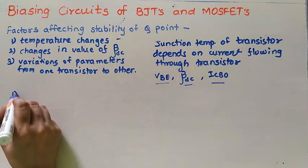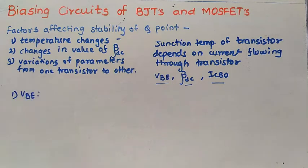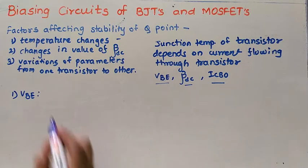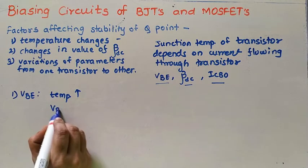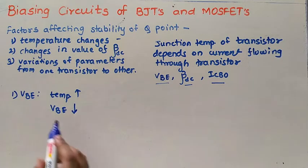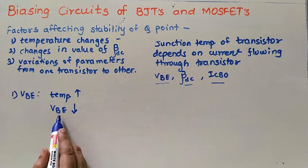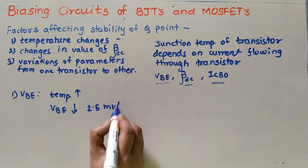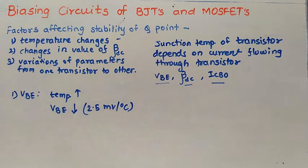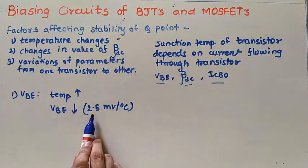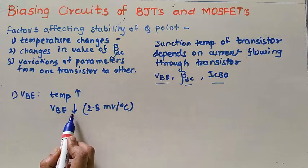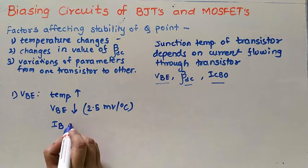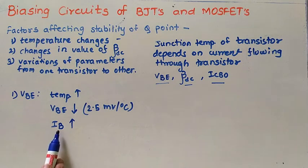Let us see first of all VBE — how temperature will affect the value of VBE. Let us consider the temperature increases. If temperature increases, then the value of VBE decreases at the rate of 2.5 millivolt per degree Celsius. Meaning if temperature increases by 1 degree, VBE decreases by 2.5 millivolt. Now if VBE decreases, our base current IB will increase. How the base current will increase, that we will see when we are going to study the biasing circuit.